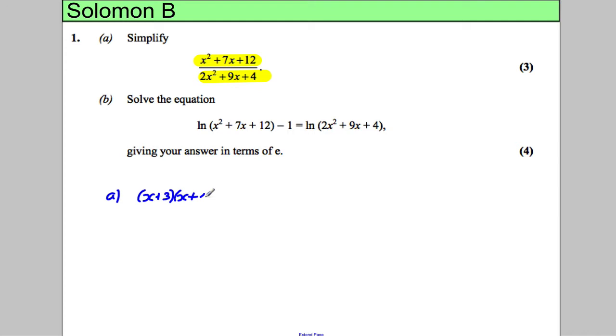The bottom factorizes to 2x times x, and it factorizes to plus 4 and plus 1. So you can divide the top and bottom by the common factor of x add 4, and this therefore would be x add 3 over 2x add 1.